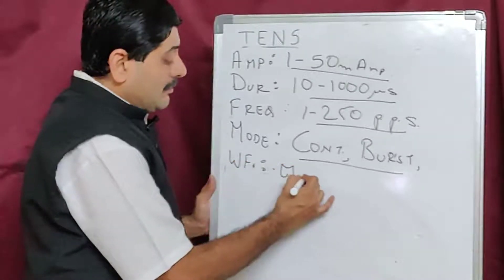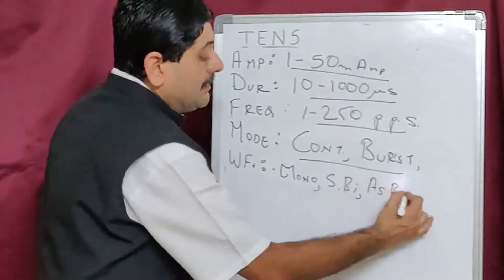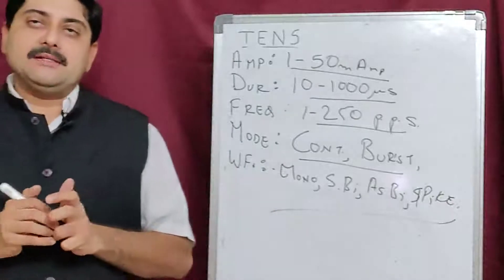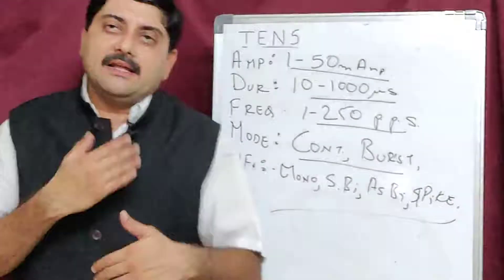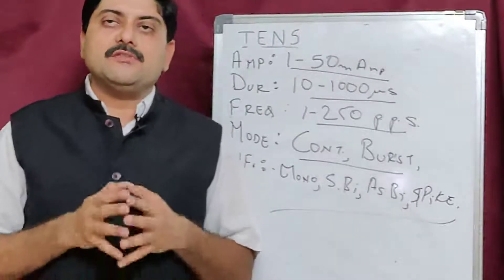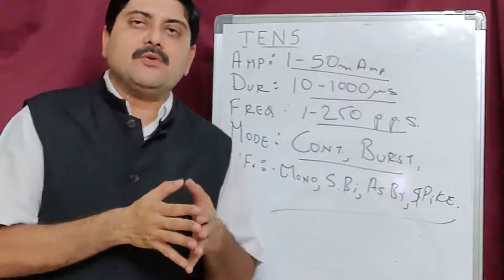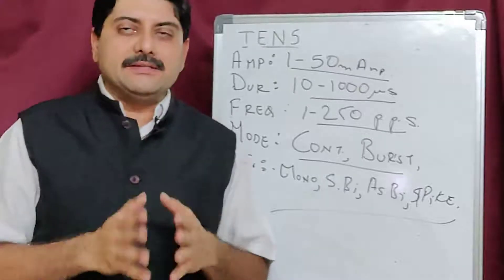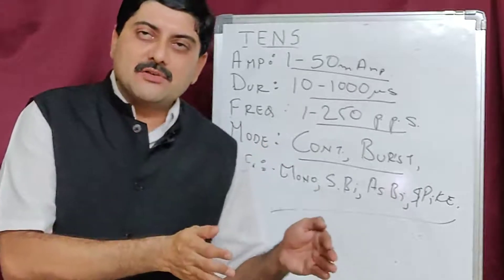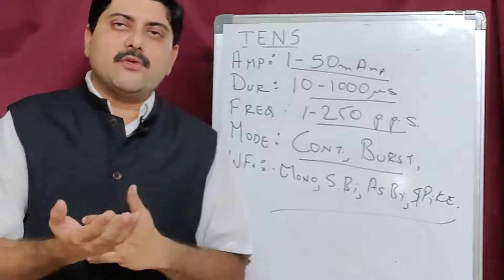To summarize: amplitude 1–50 mA, duration 10–1000 microseconds, frequency 1–250 pulses per second, modes continuous or burst, and waveforms: monophasic, symmetrical biphasic, asymmetrical biphasic, and spike. In the next lecture we will understand the physiological effects of TENS, its therapeutic effects, types of current, mechanism of action, indications, contraindications and precautions.